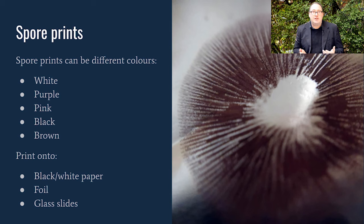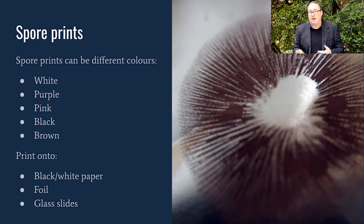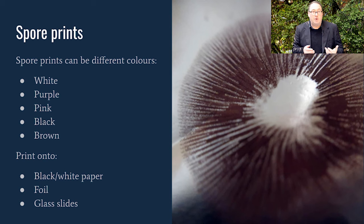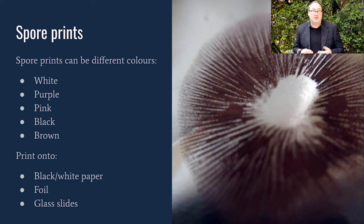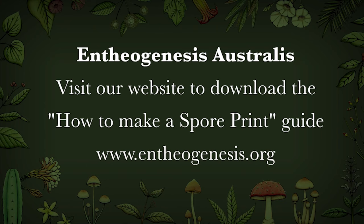Another important feature of mushrooms is their spores. Spores can be really helpful in identifying different genera — some fungi have brown spores, others white, pink, and so on. It's helpful to do a spore print onto foil, paper, or glass slides. Glass slides are great because regardless of spore colour you can still see them clearly, whereas on paper or foil this might be slightly obscured by the media. If you're interested in learning how to make a spore print, there is a fantastic resource on the Entheogenesis website under resources.